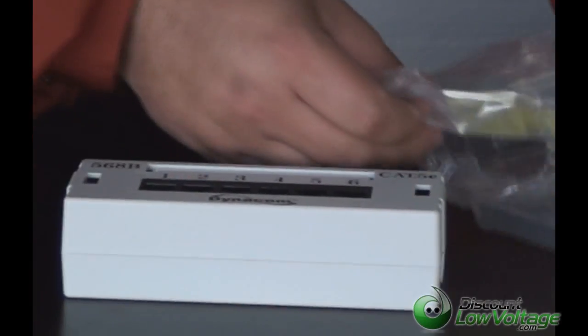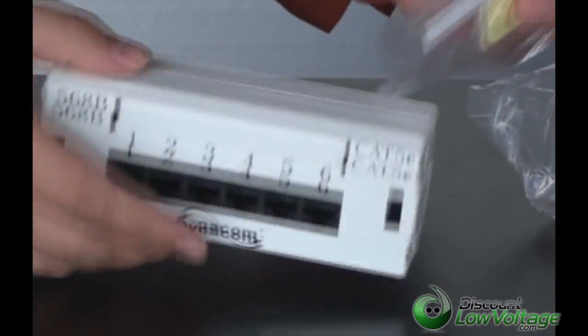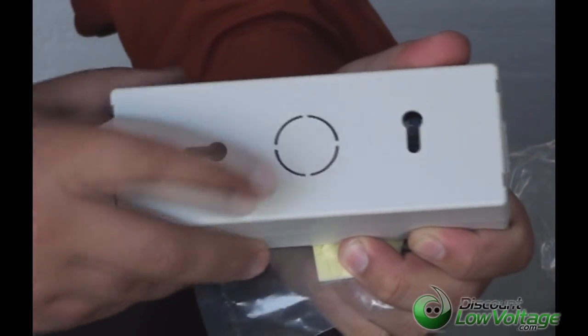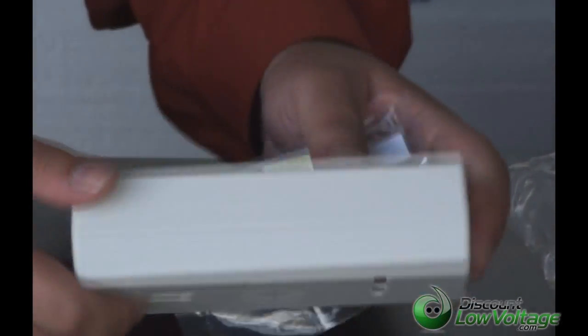Included with it is some double-sided tape here in case you want to mount it to the wall. That's what the back looks like. You've got a knockout right there and of course your screw holes to mount it to whatever you're doing.